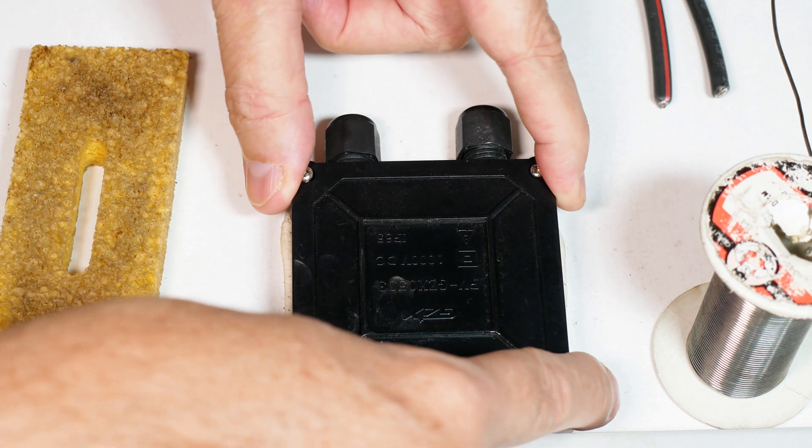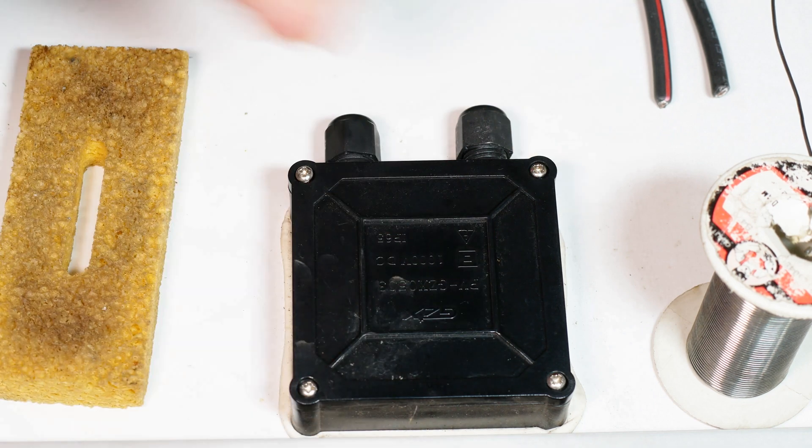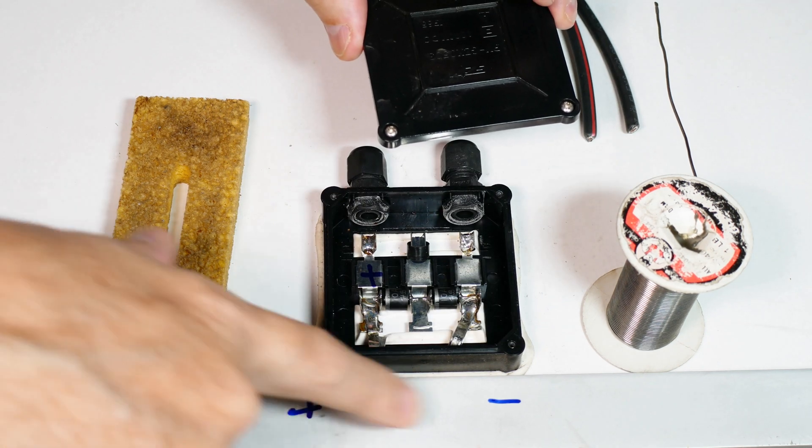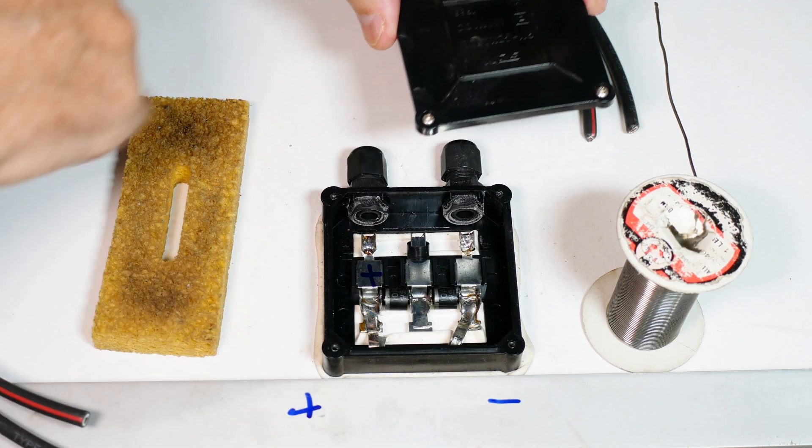I'm going to remove these four screws off the back here, take this off, and then we'll look and see what's going on underneath there and what we have to do. I've got the cover loosened and you'll notice here I've marked plus and minus on the frame just so you can see it.